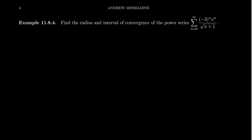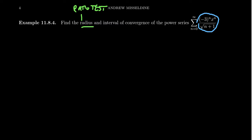Let's work through an example and identify the radius and interval of convergence. You always want to start with the radius of convergence, and you'll want to use the ratio test. The root test could also be useful, but in practice the ratio test is typically more efficient. So we look at the sequence we're adding up and compute the limit of a_{n+1} over a_n, determining when this is less than 1.